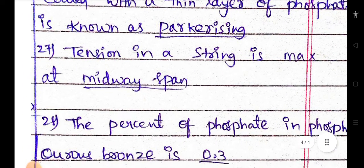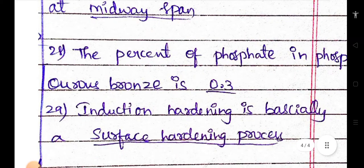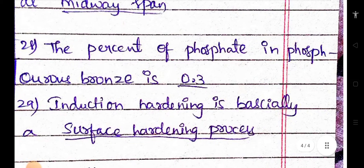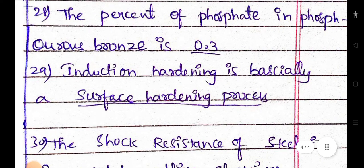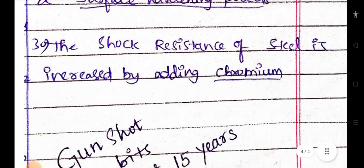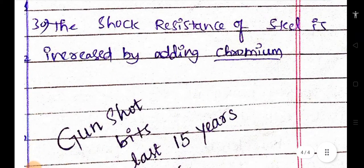Tension in a string is max at the midway span. The percent of phosphorus in phosphor bronze is 0.3. Induction hardening is basically a surface hardening process. The shock resistance of steel is increased by adding chromium.